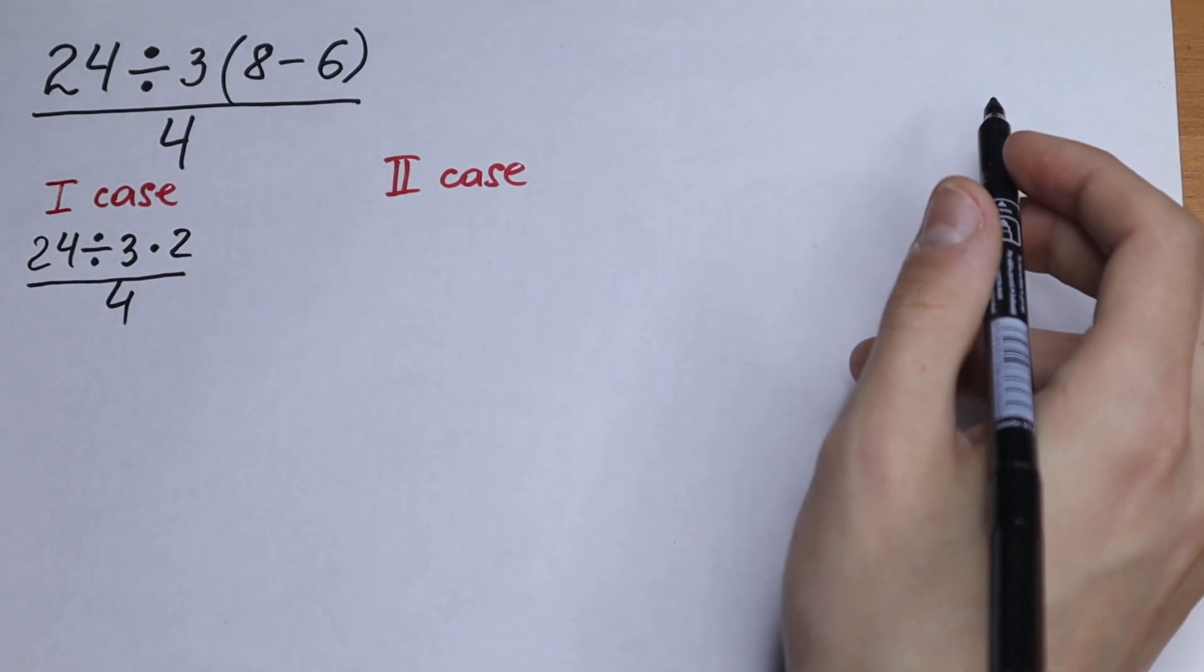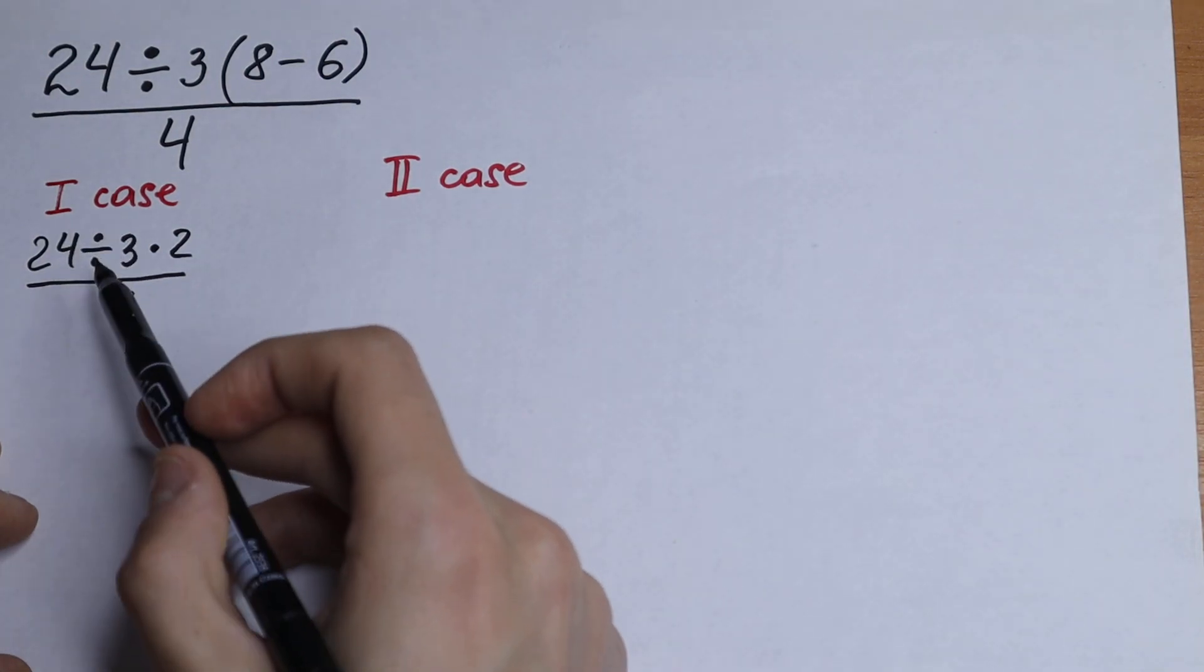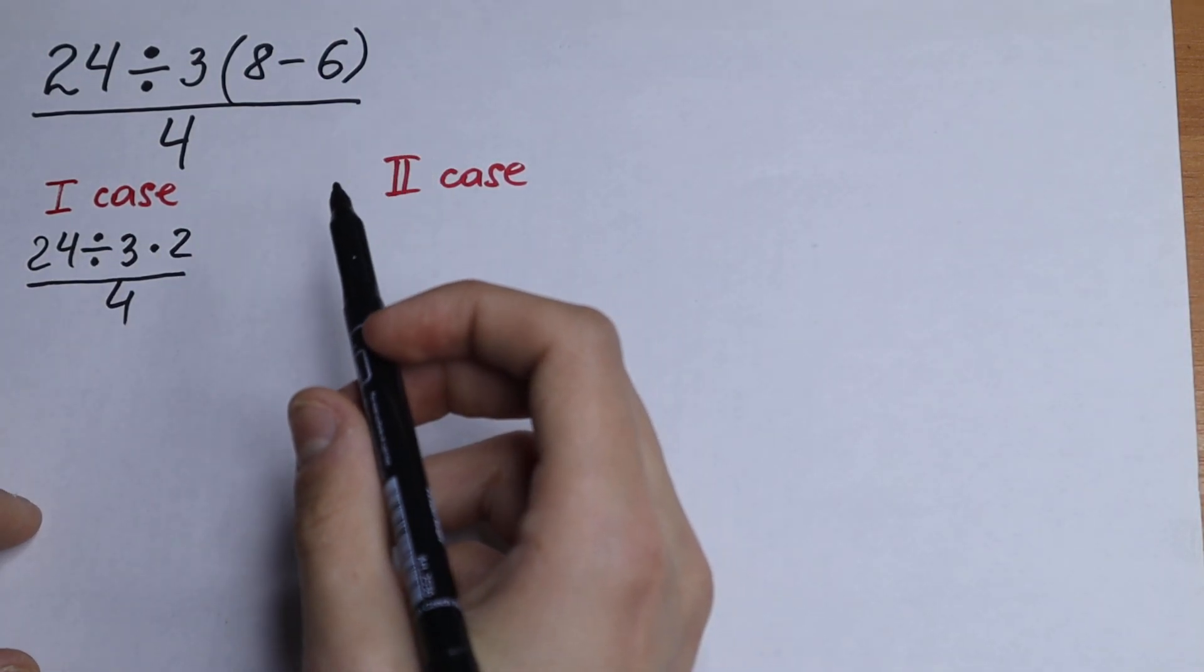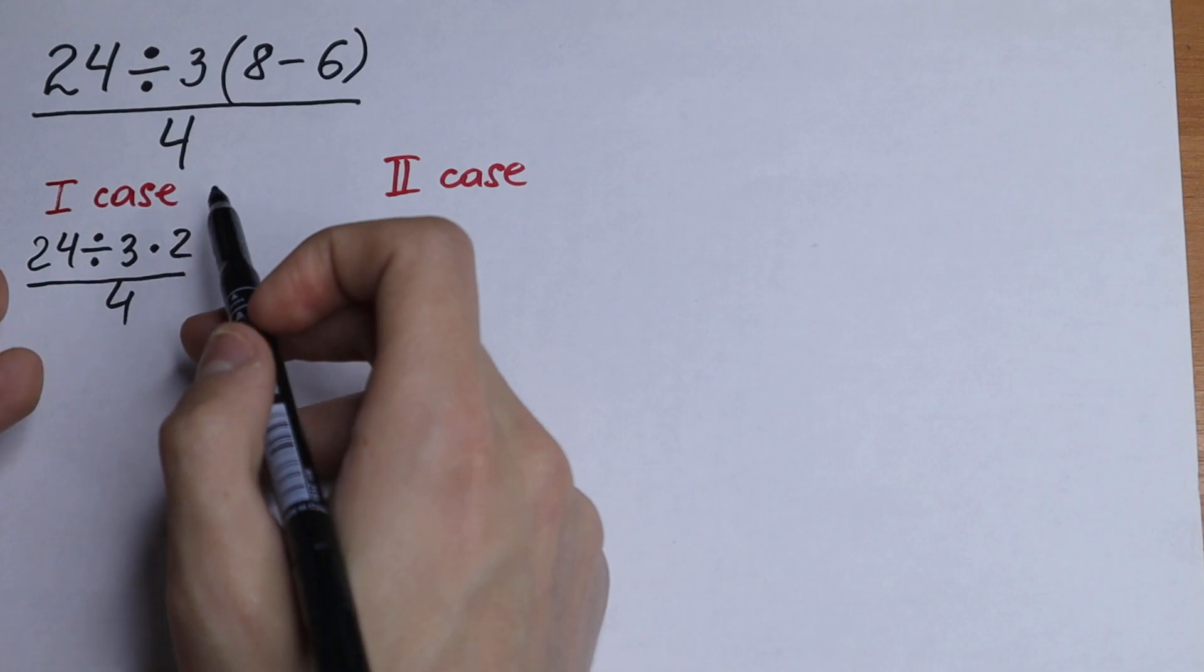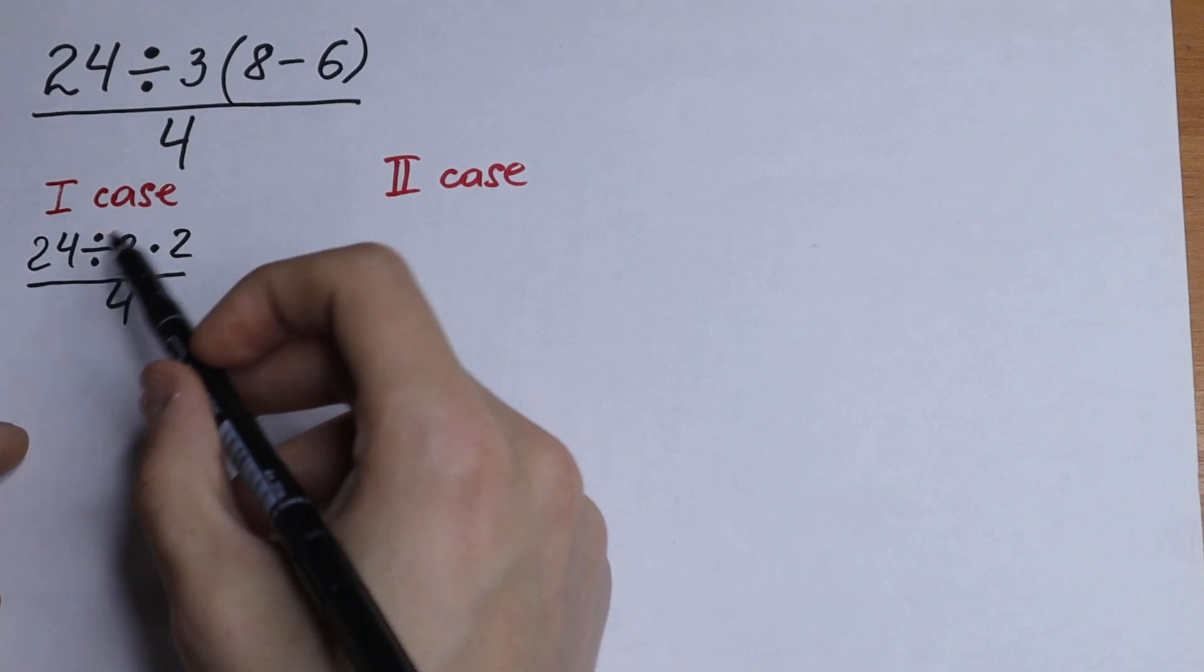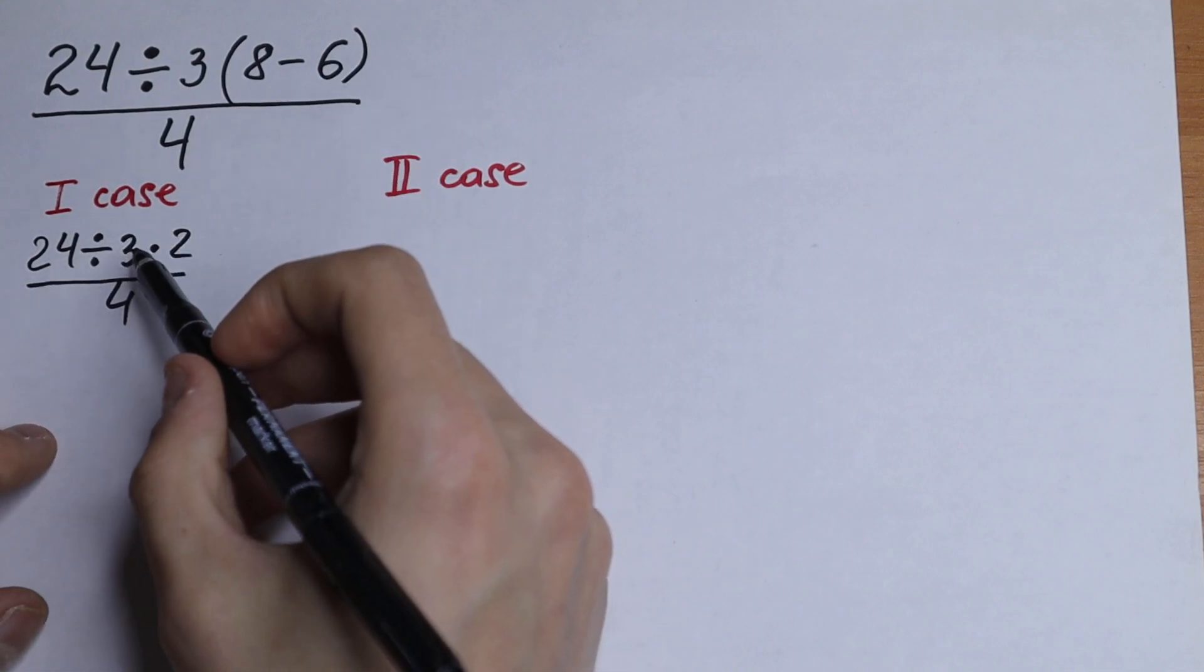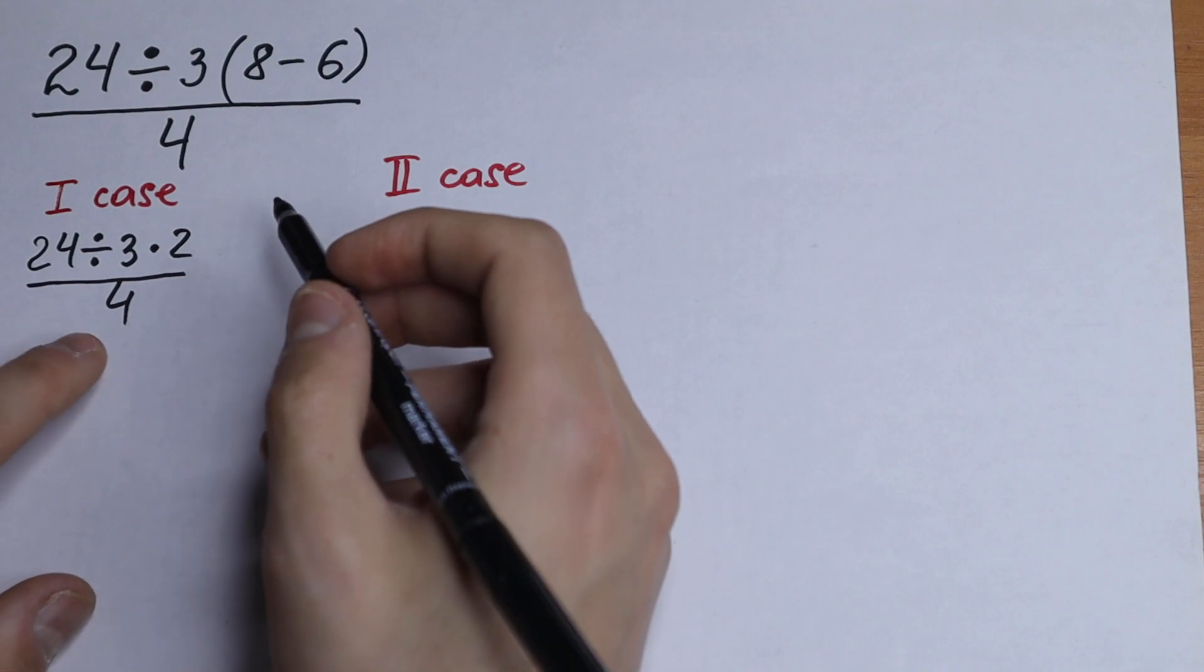So as you can see right here, we have 24 divided by 3 times 2 over 4. And let's multiply because this thing has the same priority, division and multiplication. So let's multiply 3 times 2. We will have 6.